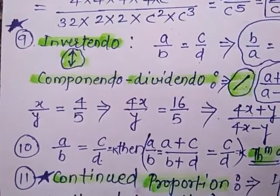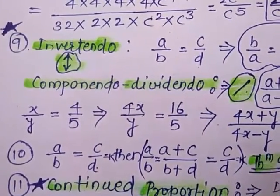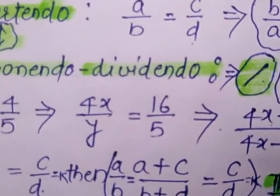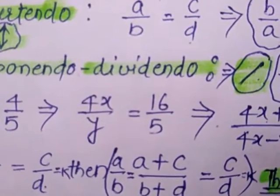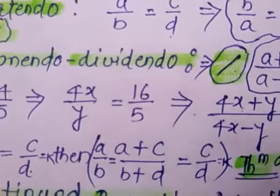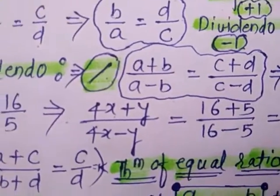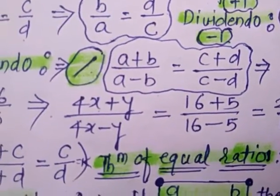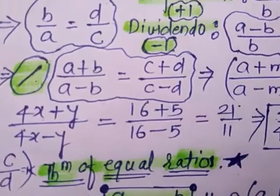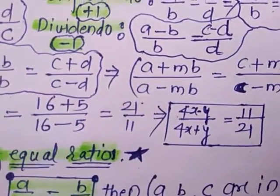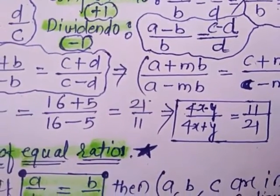In the following example applying componendo and dividendo: given X/Y is equal to 4/5, multiplying both sides by 4 gives 4X/Y is equal to 16/5. Applying componendo and dividendo: (4X+Y)/(4X−Y) is equal to (16+5)/(16−5), that is 21/11. So (4X−Y)/(4X+Y) is equal to 11/21.